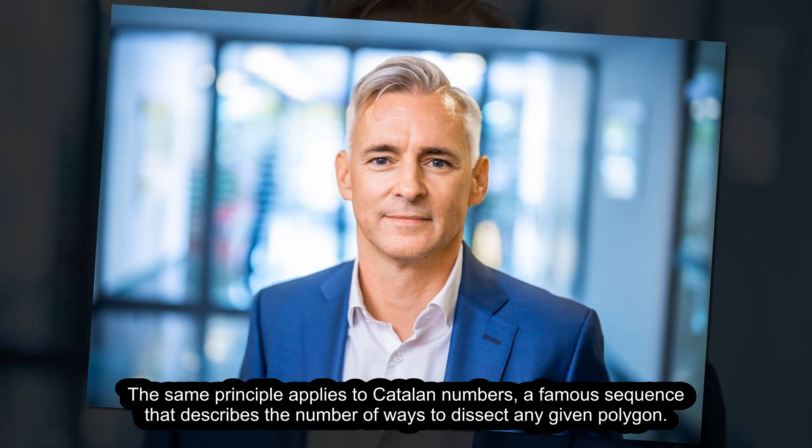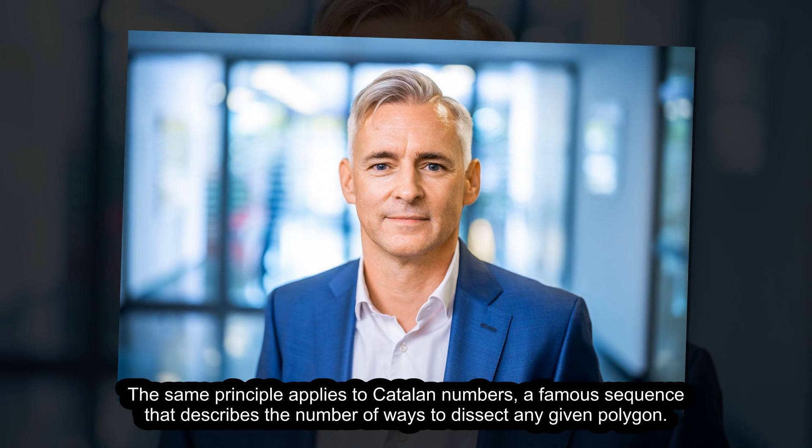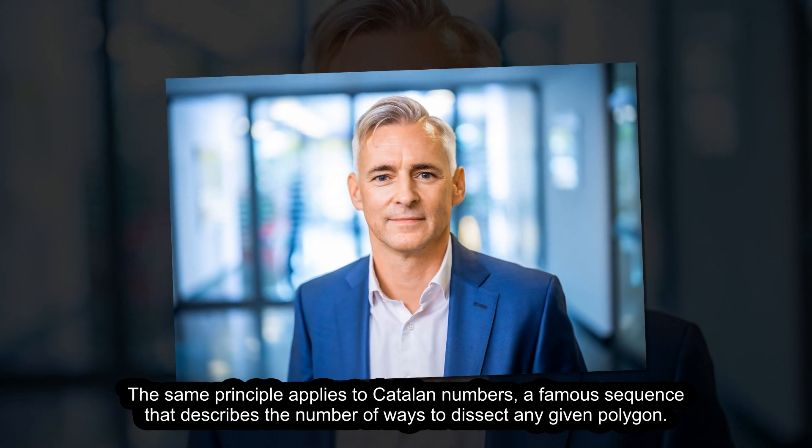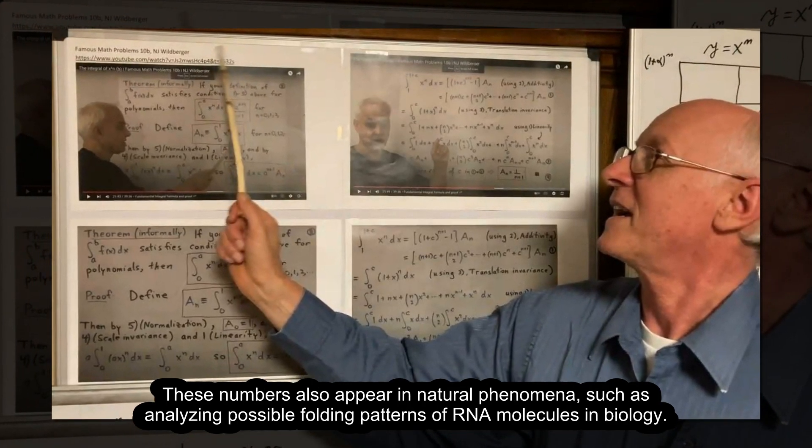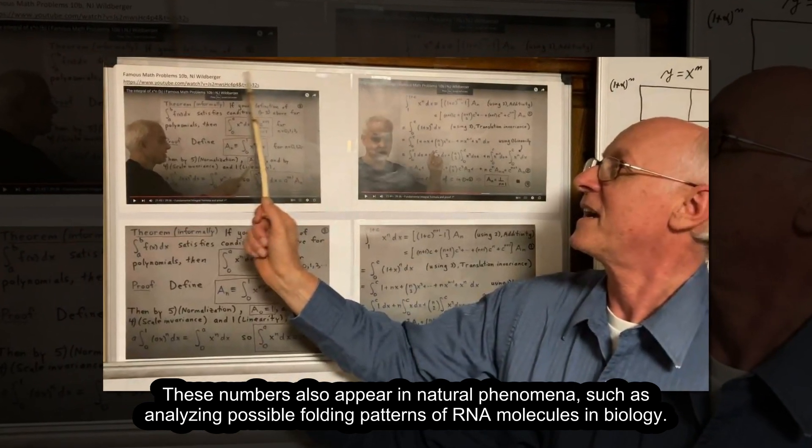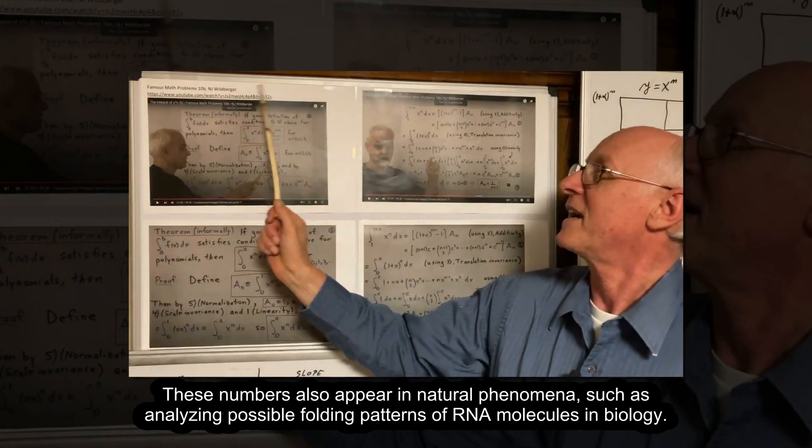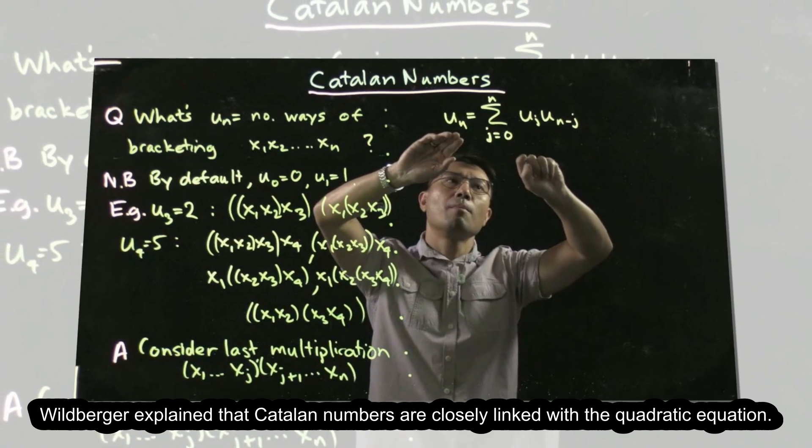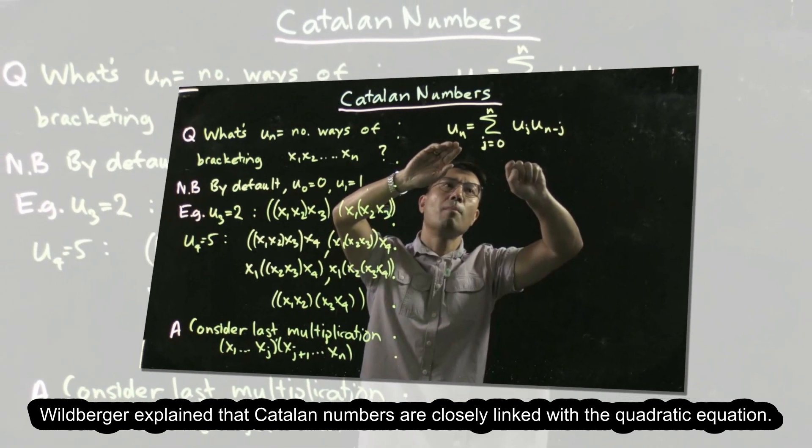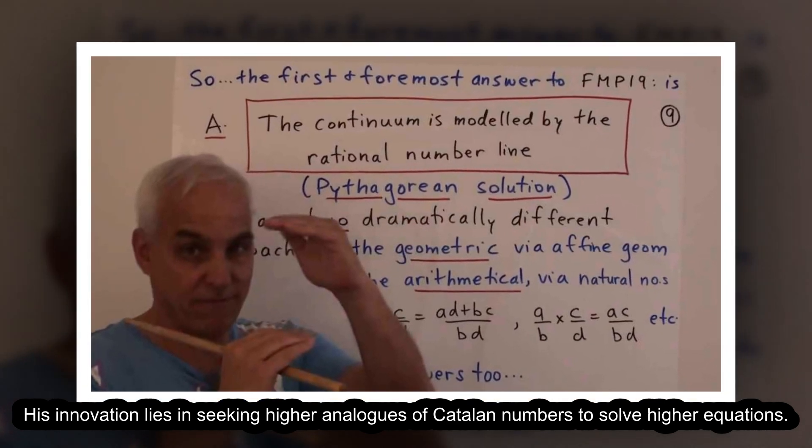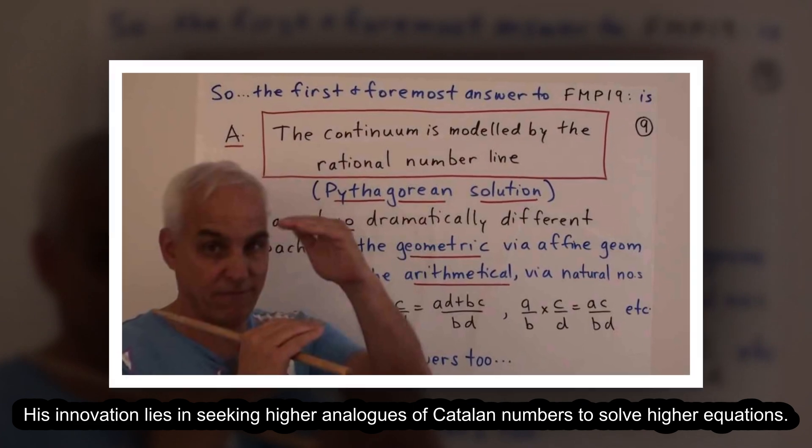The same principle applies to Catalan numbers, a famous sequence that describes the number of ways to dissect any given polygon. These numbers also appear in natural phenomena, such as analyzing possible folding patterns of RNA molecules in biology. Wildberger explained that Catalan numbers are closely linked with the quadratic equation. His innovation lies in seeking higher analogs of Catalan numbers to solve higher equations.